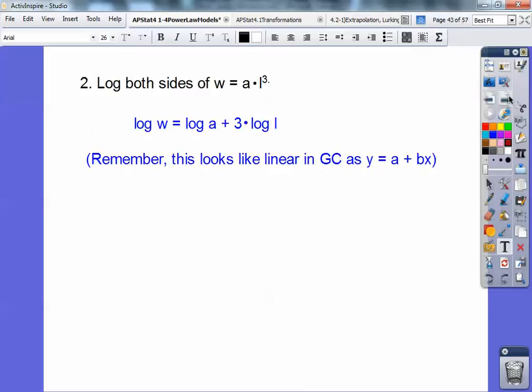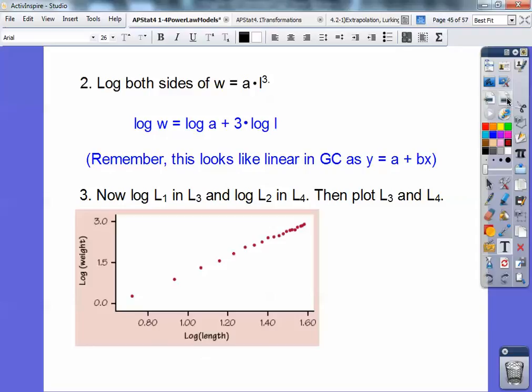So log both sides of this. Remember this looks like the linear equation in your graphing calculator, y equals a plus bx, actually my calculator says ax plus b. So we're going to log list one in list three, and we're going to log list two and list four, so go up to the top of list three, and right at the top, highlight list three, and punch in there log list one, go up to the top of list four, highlight in there log list two, and then we're going to plot list three and list four. So when you do that, look at that, magical, nice and straight line right there.